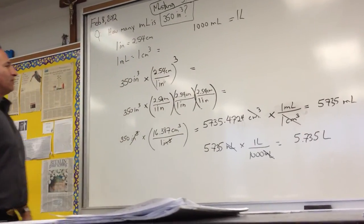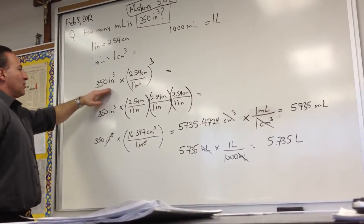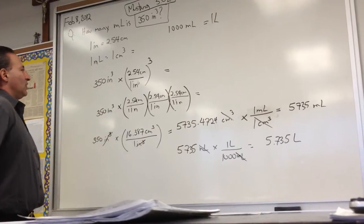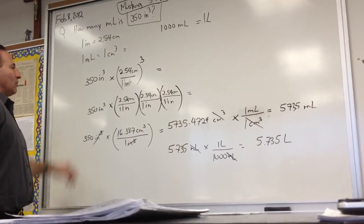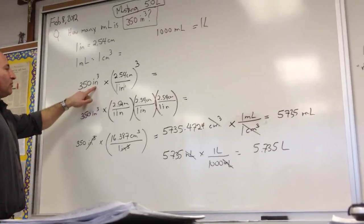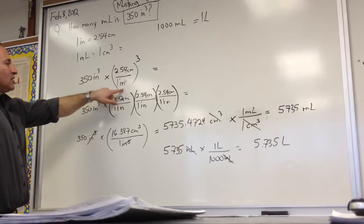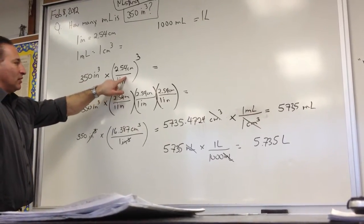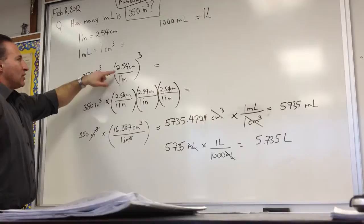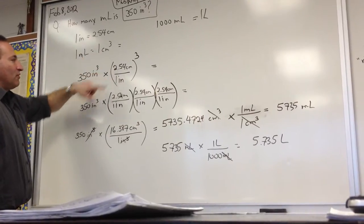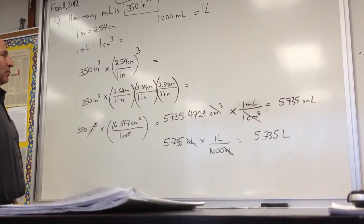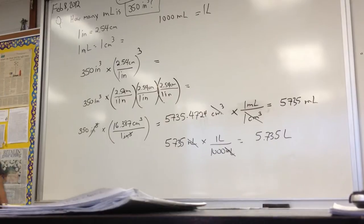So the first step in solving the problem is to start with the number that we want to convert, 350 inches cubed. And we want to remove this unit. So we're going to put inches in the denominator of this conversion factor. And we know that the linear conversion factor is 2.54 centimeters per inch. But we're not dealing in linear inches. We're dealing in volume.